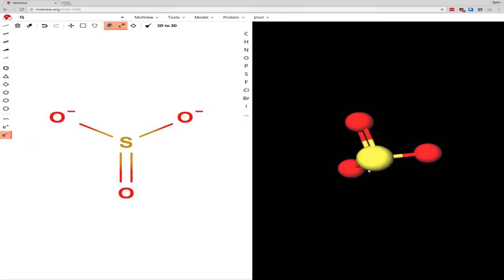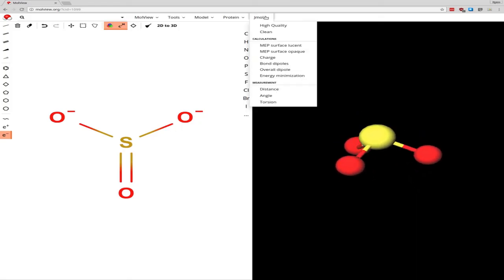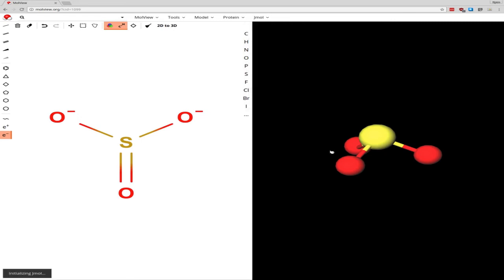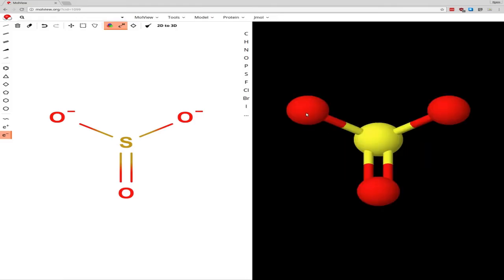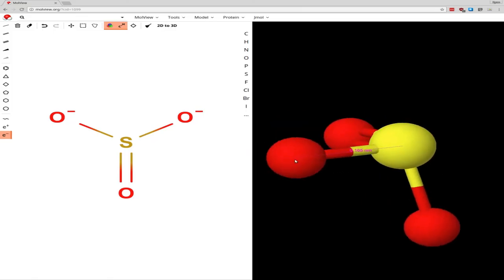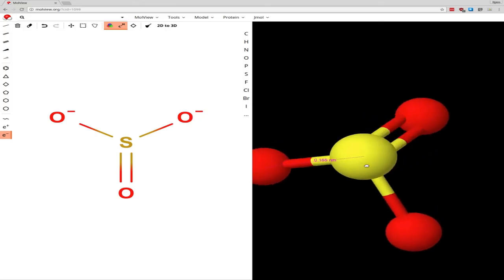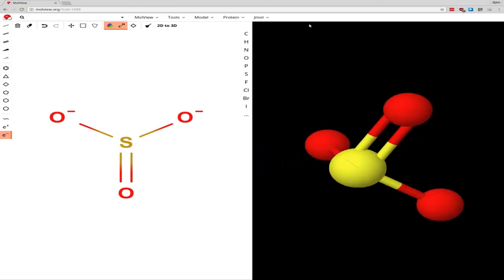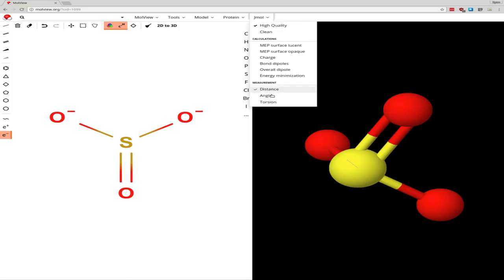Now once you have the structure, Malvue has some useful tools available. Let's go over here to Jmol. One thing that you can do is you can measure the distance between atoms. You click Distance, and then select any two atoms. So it tells us we have a distance of 0.165 nanometers between this oxygen and this sulfur over here. So let's see if the distance is any different for that double bond.